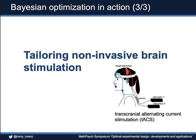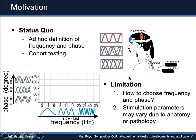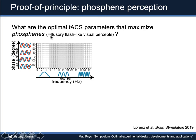The third application is to use this technique to tailor non-invasive brain stimulation. In this study, we use a technique called transcranial alternating current stimulation — it's non-invasive and applies alternating currents, so oscillations, into the brain. The status quo in the field is to ad hoc define stimulation parameters and test on a cohort of subjects. But how can we decide that those stimulation parameters work for everyone, given huge heterogeneity in anatomy and pathology? In this proof-of-principle study, we chose a well-known feature of this stimulation technique: phosphene perception, where at certain frequencies, people see visual flashes.